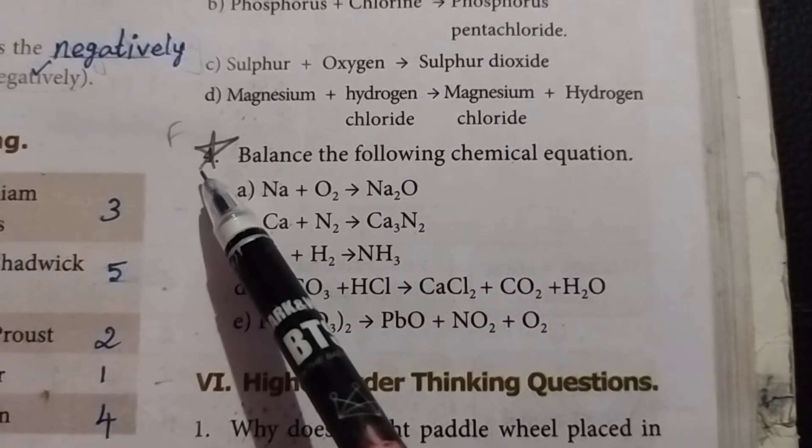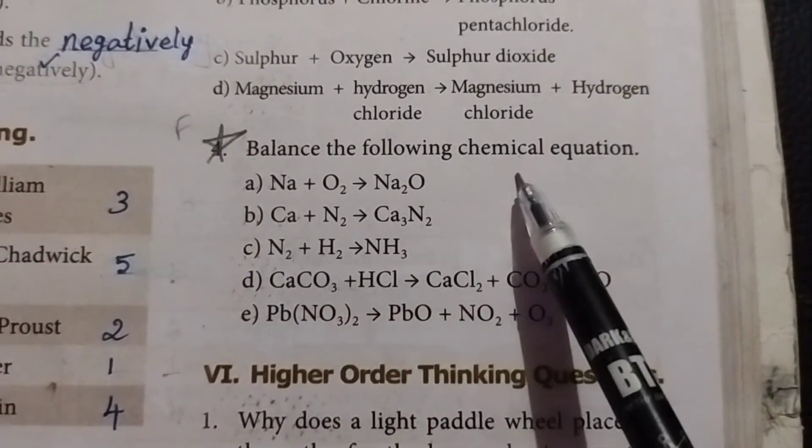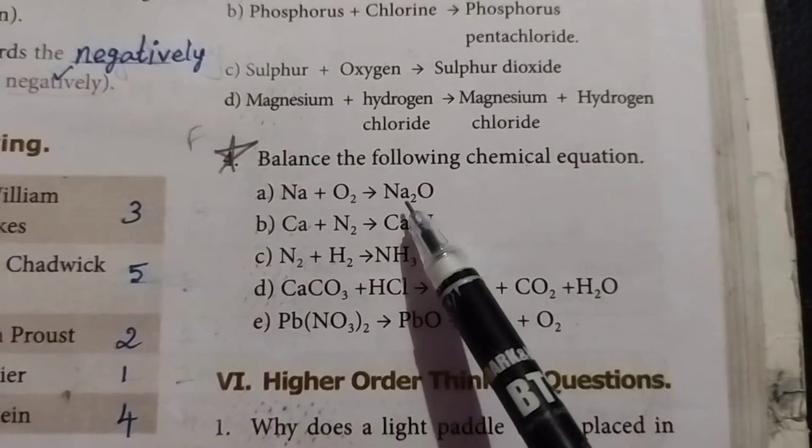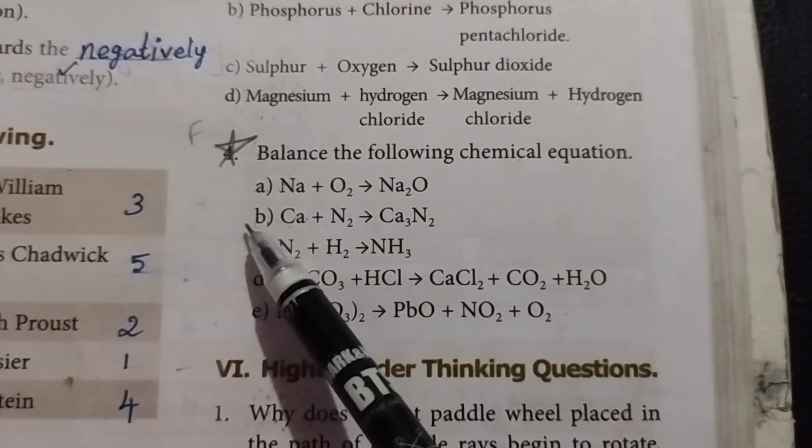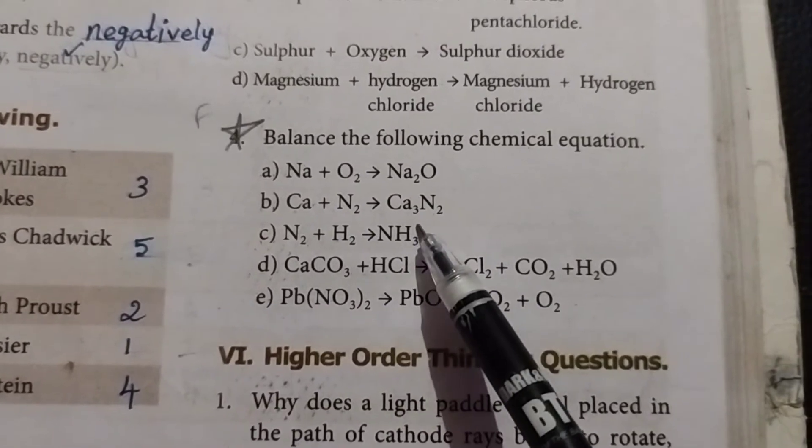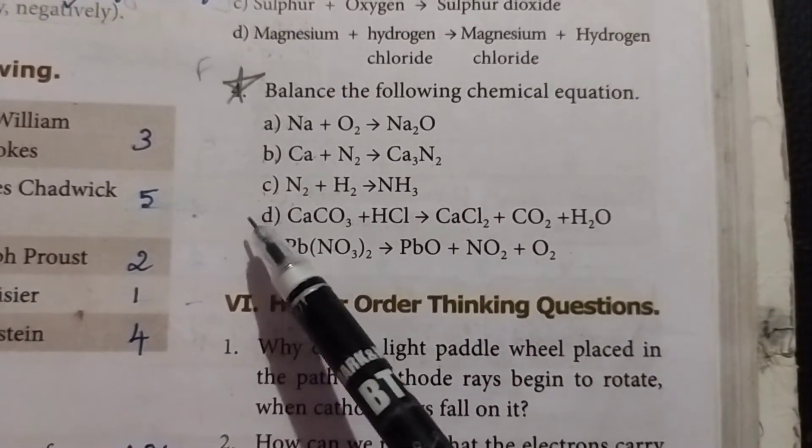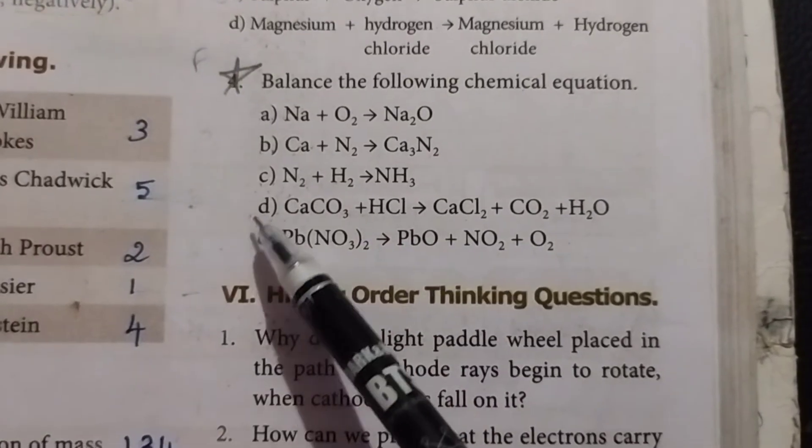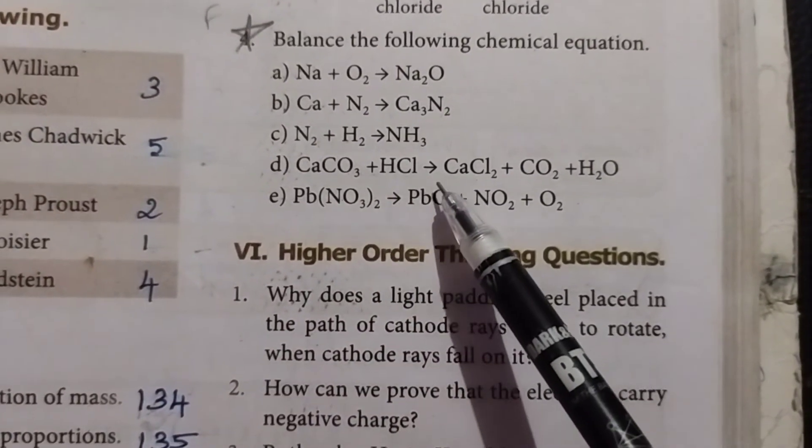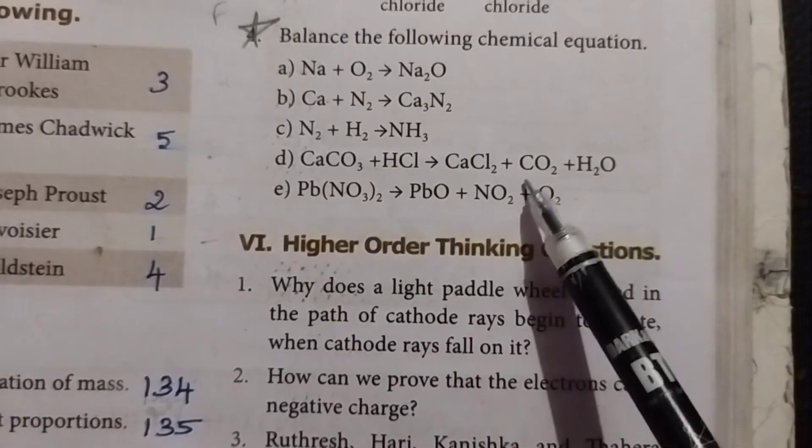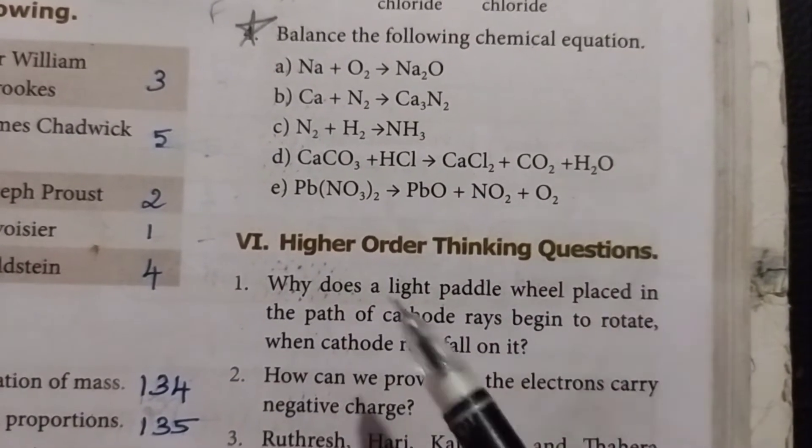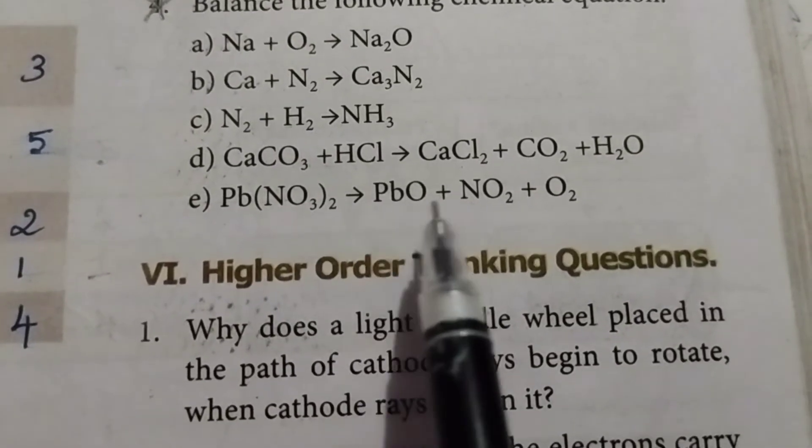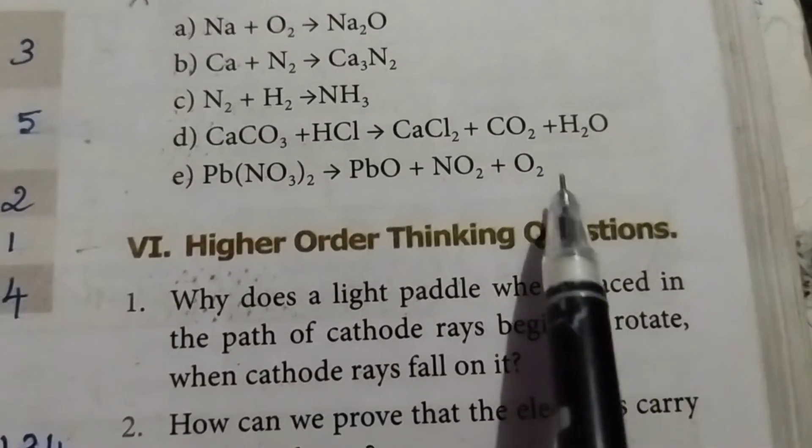Fourth question: balance the following chemical equations. Option A: Na + O2 → Na2O. Option B: Ca + N2 → Ca3N2. Option C: N2 + H2 → NH3. Option D: CaCO3 + HCl → CaCl2 + CO2 + H2O. Option E: Pb(NO3)2 → PbO + NO2 + O2.